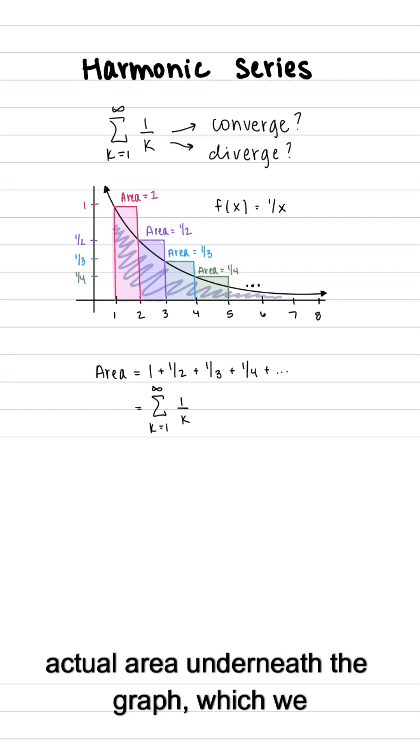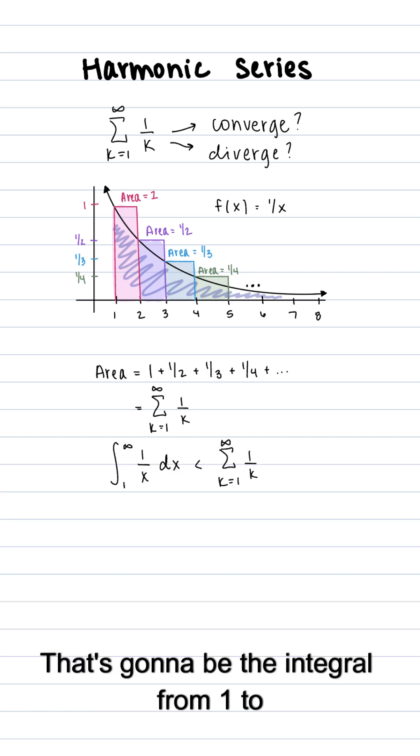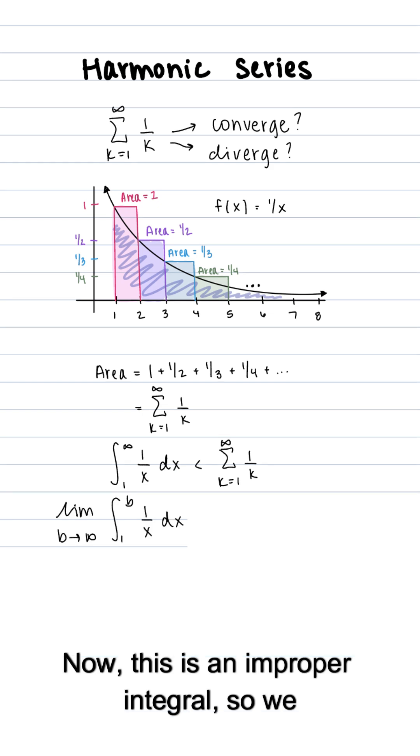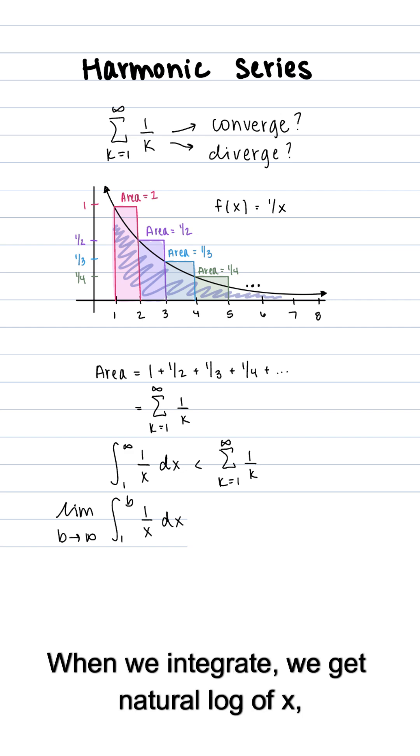Now let's go ahead and compare that to the actual area underneath the graph, which we can represent with an integral. That's going to be the integral from 1 to infinity of 1 over x dx. Now this is an improper integral, so we have to take the limit as b goes to infinity and make that our upper bound.